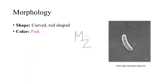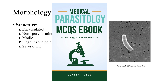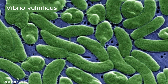Morphology: Vibrio vulnificus is a curved, rod-shaped bacterium. It is pink-colored because it's gram-negative. It is an encapsulated bacterium. It does not form spores. It is motile and has a flagellum at one end, and it has several pili spread over its surface to help it attach to the host. Under the microscope you can see rod-shaped and curved bacteria.